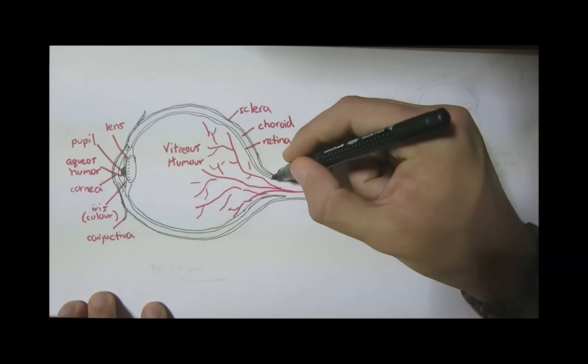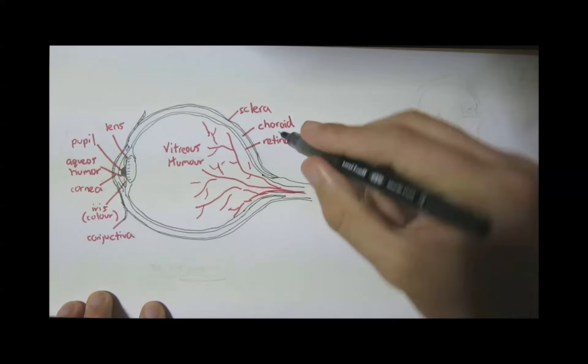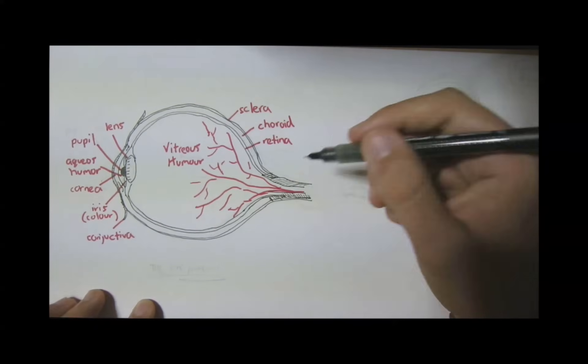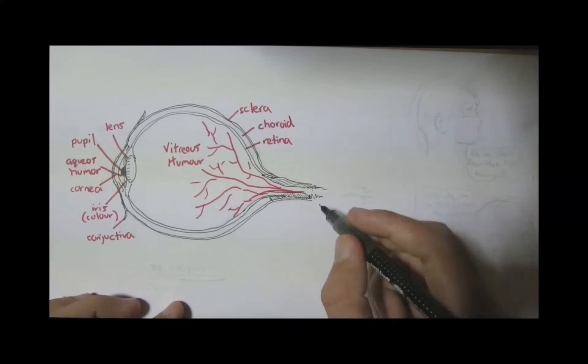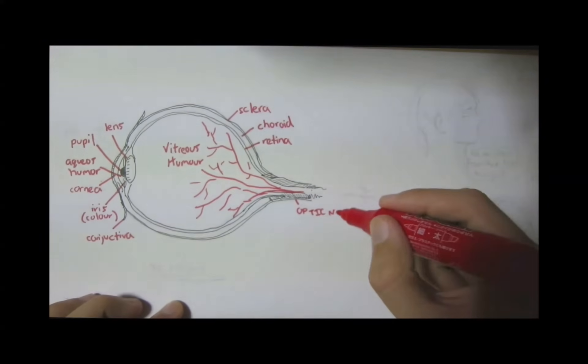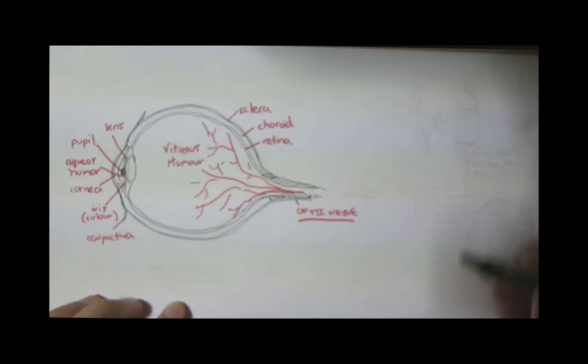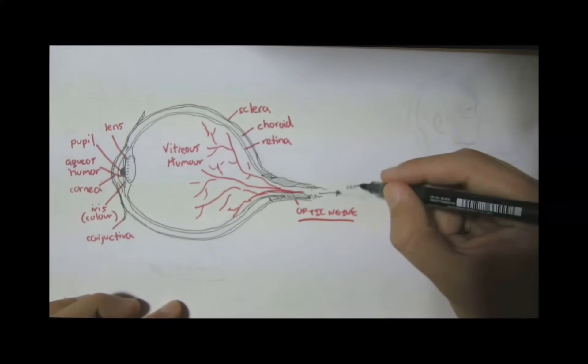Now, there are all these veins here which will nourish the eye. And here is the optic nerve coming from the retina, which then sends info into the brain, telling us what we are actually seeing, forming an image.